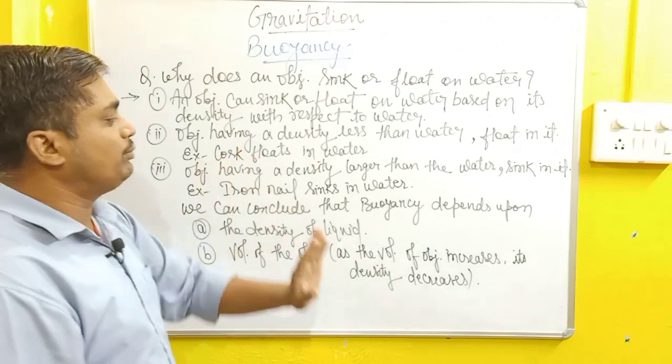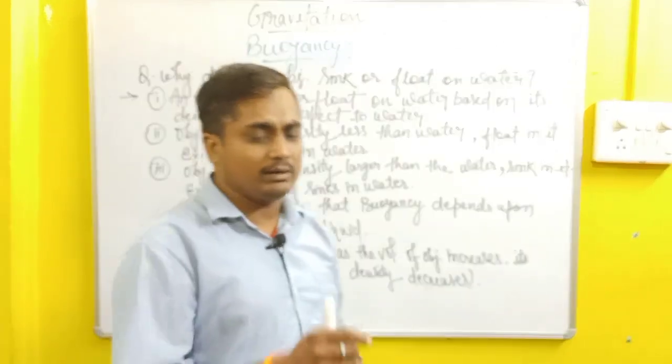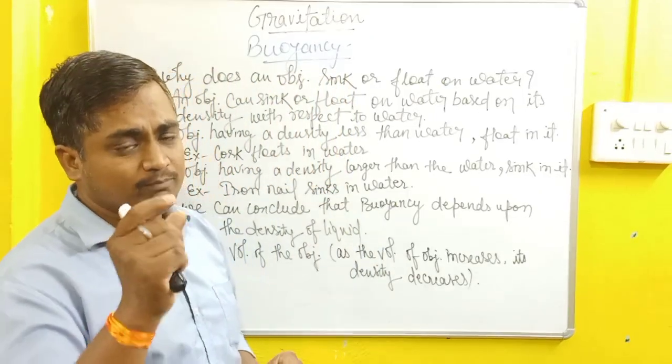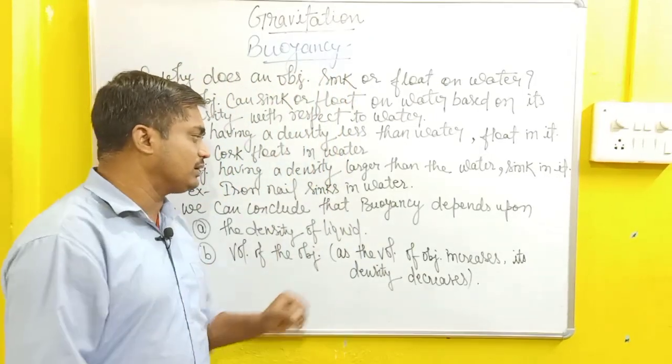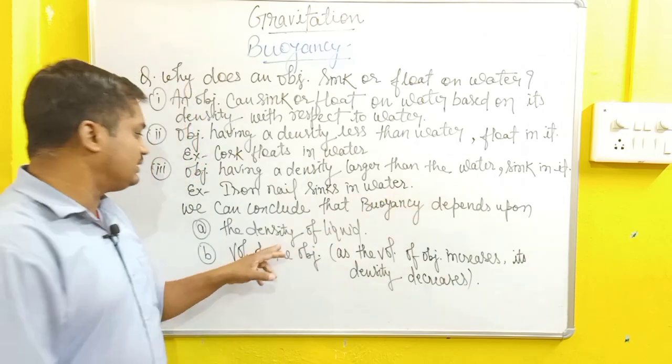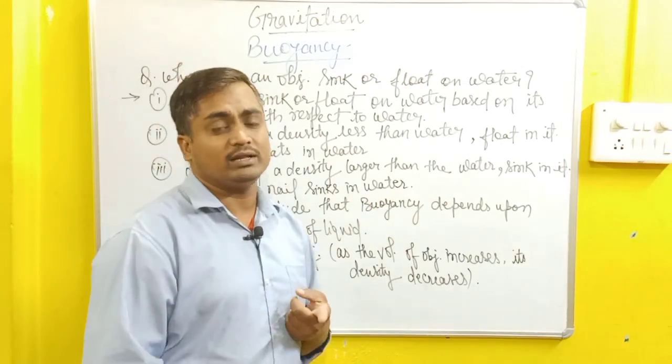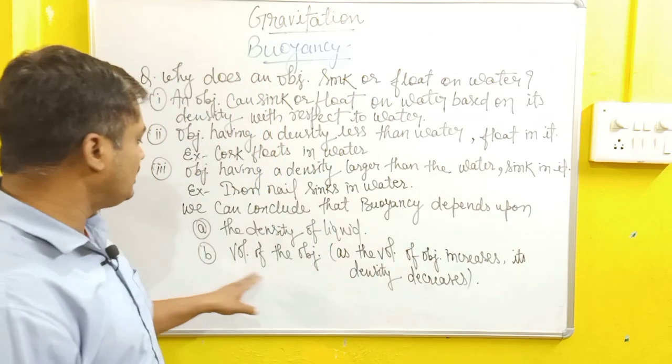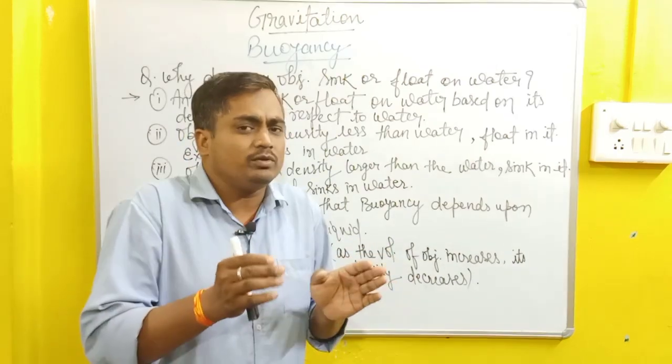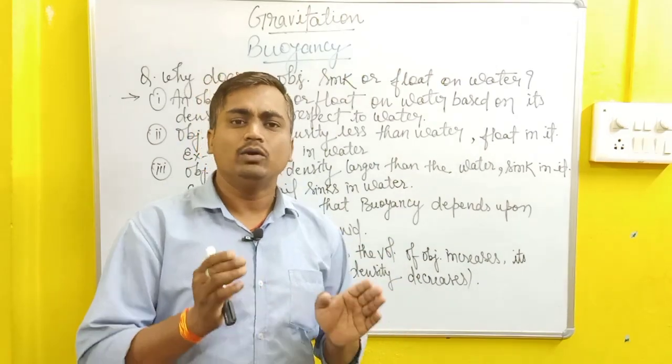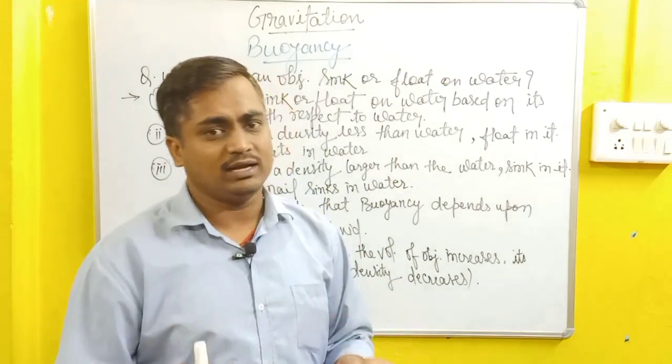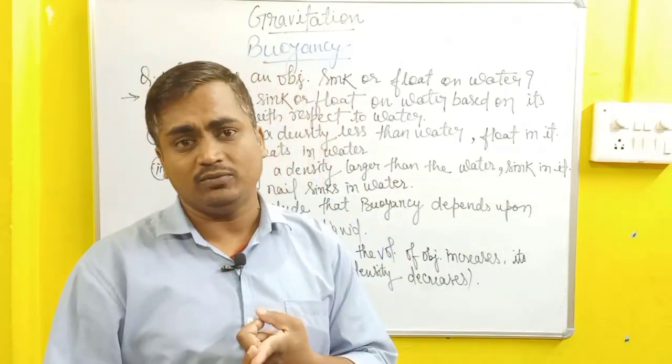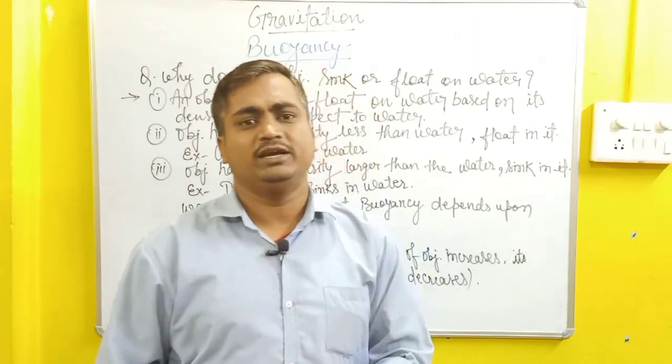So we can conclude that the buoyancy depends upon, from these examples we understand that buoyancy depends on which things, which points, which factors. It depends upon the density of liquid. First, what is the liquid's density, how much it is. Second, volume of the object. The object we are taking, what is that object's volume, it depends on that. So there are two points. First one is density of water and the second one is what is the volume of that object.